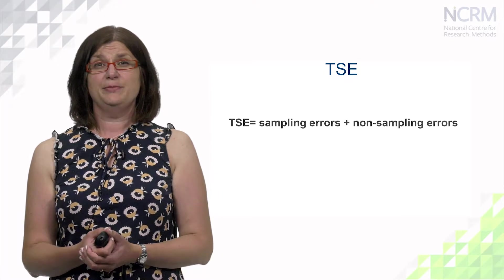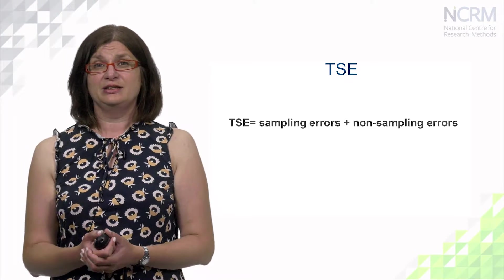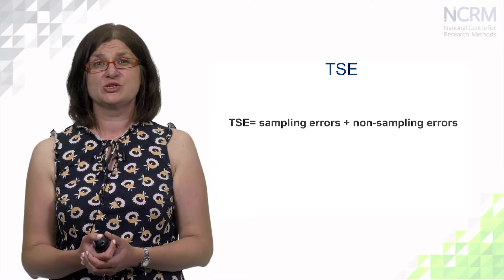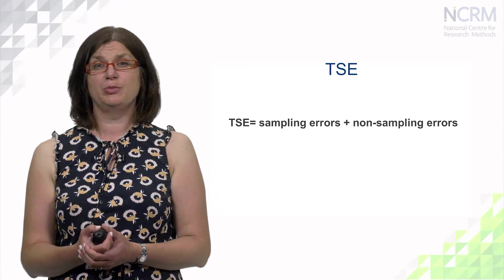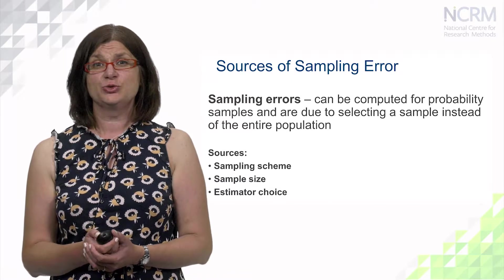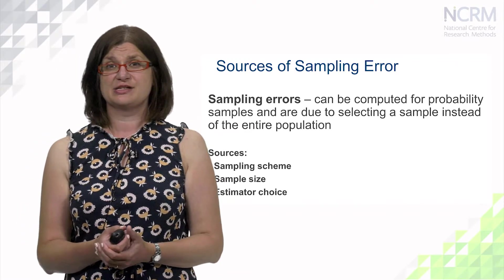According to Robert Groves, total survey error is the combination of sampling errors and non-sampling errors. Historically, when data quality of surveys was discussed, the main focus was on sampling errors. However, now we have two very important components: sampling errors and non-sampling errors. Sampling errors can be computed for probability samples only and are due to selecting a sample instead of the entire population. Non-sampling errors are errors due to mistakes or system deficiencies, and can also come from incomplete responses.